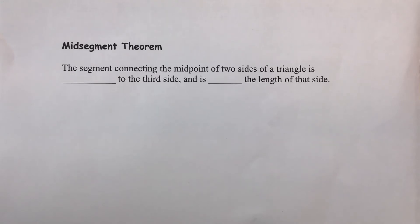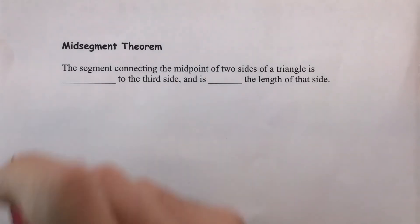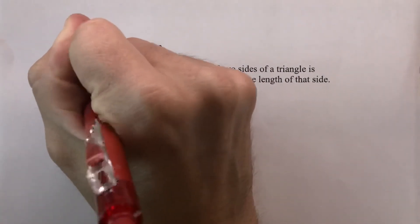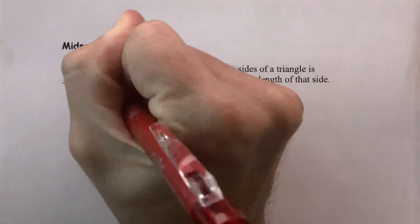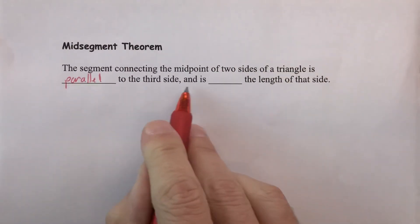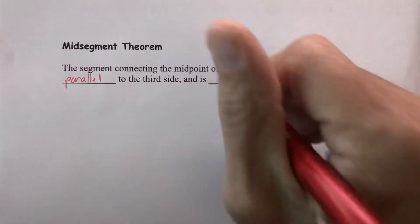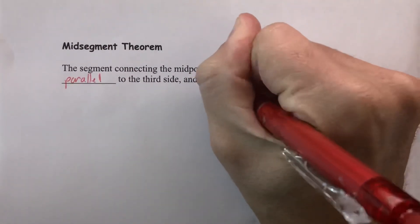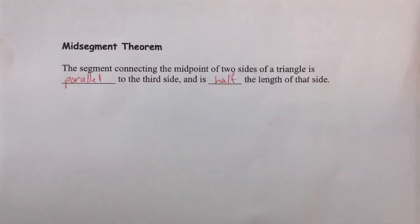Let's officially state the Midsegment Theorem. It has two parts: the segment connecting the midpoints of two sides of a triangle is parallel to the third side, and it is half the length of that third side.